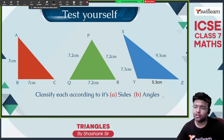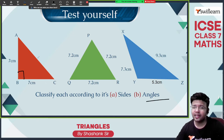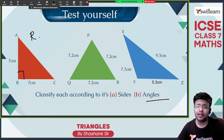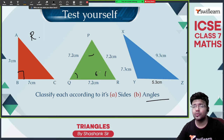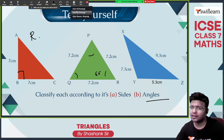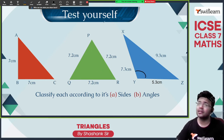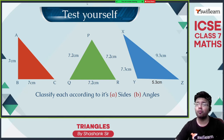Based on angles: one of the angles is 90 degrees, so this is a right angled triangle. Since it is an equilateral triangle, all the angles are equal to 60 degrees — this is an acute angle triangle. And this one, we can see one of the angles is greater than 90, so it is an obtuse triangle.